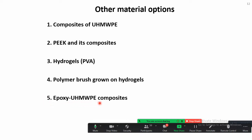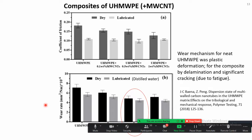Quickly surveying the literature: composites of UHMWPE with multi-wall CNT (carbon nanotubes) have been used. With CNT, the coefficient of friction may not decrease much but there is some decrease, and wear is decreased. These tests were conducted in dry conditions as well as distilled water lubrication. Ideally, bovine serum should be used because it resembles the synovial fluid in our joints — results from distilled water may not be representative of the actual application.